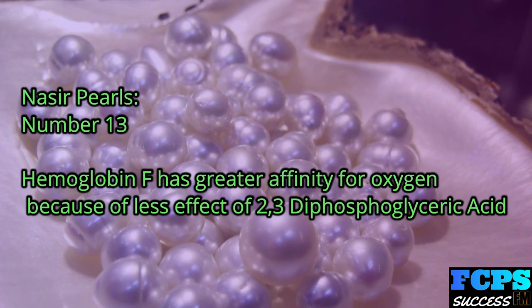Nasir Pearl number 13: Hemoglobin F has a greater affinity for oxygen because of the lesser effect of 2,3-diphosphoglyceric acid (2,3-DPG).